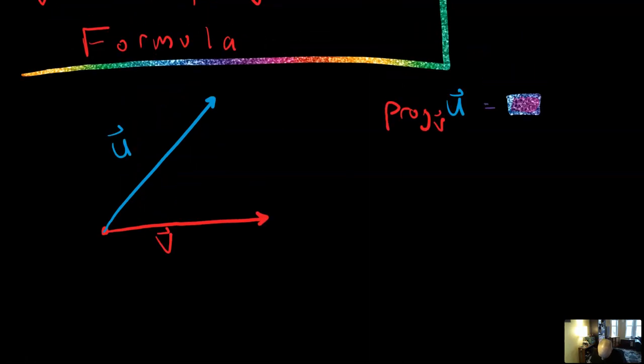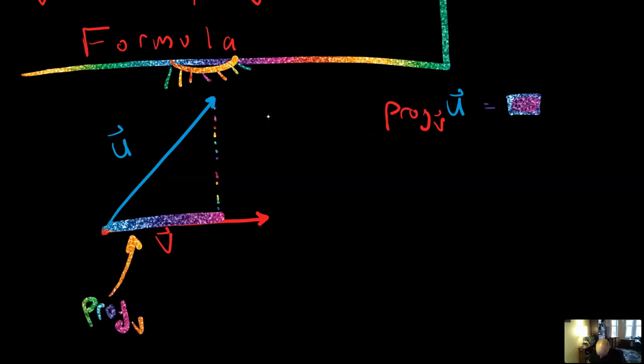So the way this works is you imagine that there's a rainbow sun up here shining down and casting a shadow from vector U onto vector V. Vector U and vector V don't have to be in this particular orientation. The sun doesn't have to be straight up and down. These could be at a 45 degree angle and the projection would work the same. So this thing right here is that projection onto V of vector U.